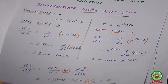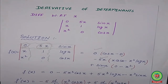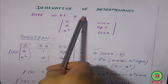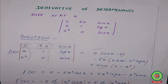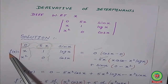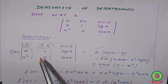Now one more subtopic: derivative of determinants. We have already studied determinants — 2×2 and 3×3 determinants. I am taking one example where all elements are functions of one variable x, so we differentiate with respect to x. According to the rule, you first solve the determinant — find the value of the given determinant. At last, whatever answer you get after evaluating the determinant, you then differentiate that function.